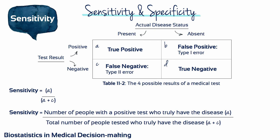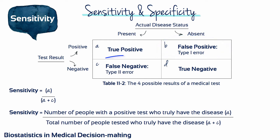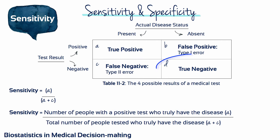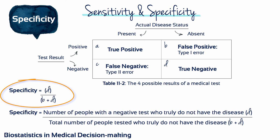Both sensitivity and specificity can be quantified, and this helps us with decision-making. There are four possibilities after a test has been run: a true positive (A) — the person tested positive and the disease is really present; a false positive (B) — the person tested positive but does not really have the disease; a false negative (C) — the person tested negative but really does have the disease; or a true negative (D) — the person tested negative and really does not have the disease. When the numbers from actual tests are plugged into these four boxes, we can calculate sensitivity and specificity according to the equations shown.